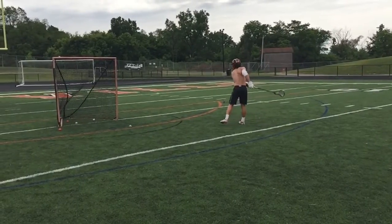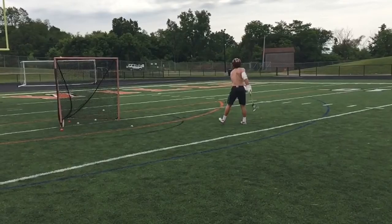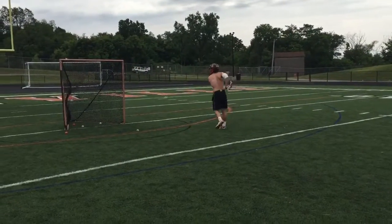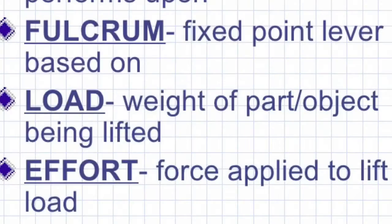The first thing in physics that relates to the lacrosse shot is levers. The three main parts to a lever are the fulcrum, which is the fixed point that the lever moves on; the load, also called the resistance, which is the weight of the object being lifted; and the effort, which is the force that is applied to lift the load.